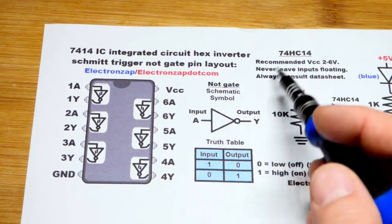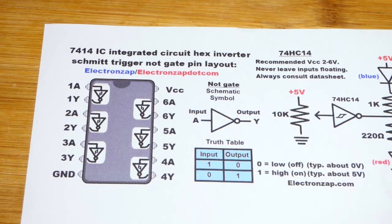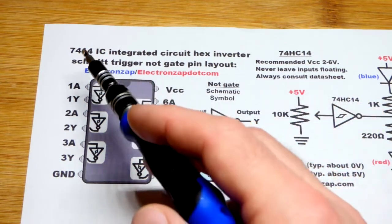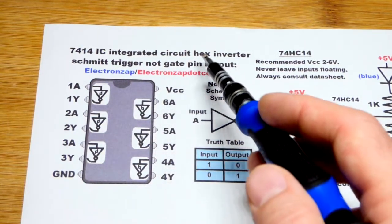There's also a common version LS for low power Schottky and other versions, but those are the main two. The 7414 has this pin layout right here.